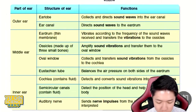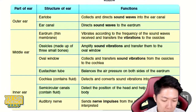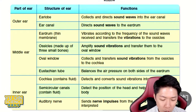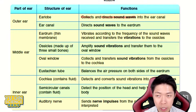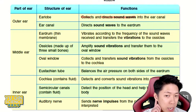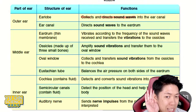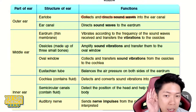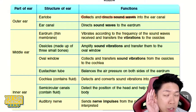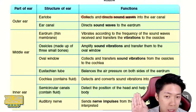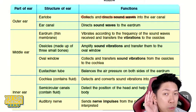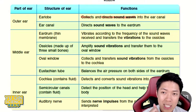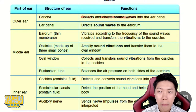Let's get into the functions. The earlobe is to collect and direct sound waves into the ear canal. This works like if you extend your hand to your ear — you can actually hear anything better. That's like an extension of your earlobe. This kind of structure actually helps you collect sound and direct it into your ear.